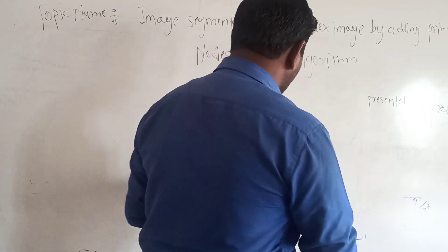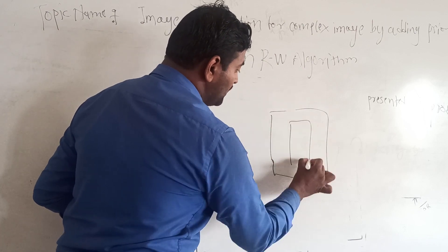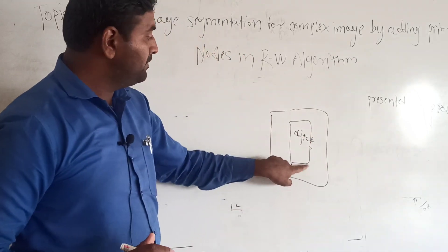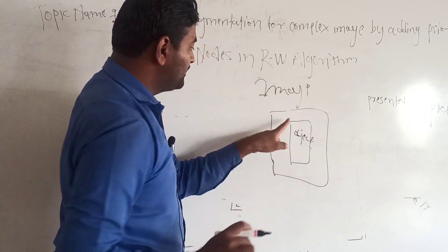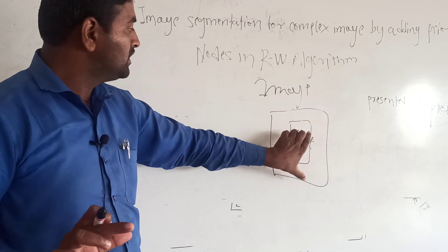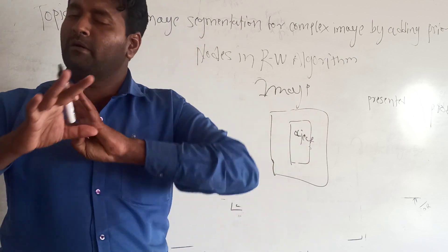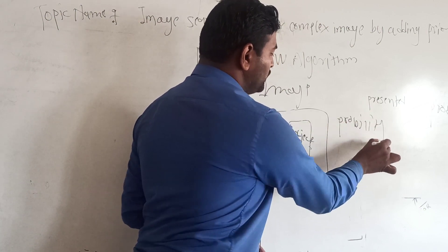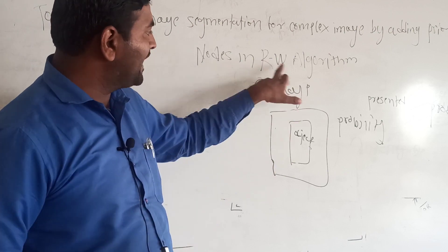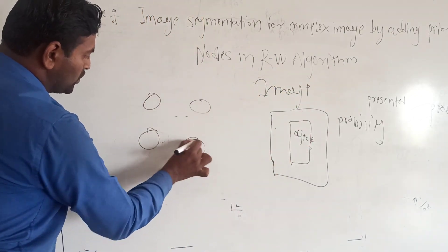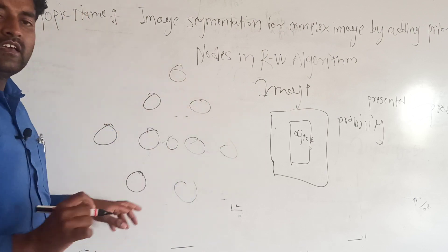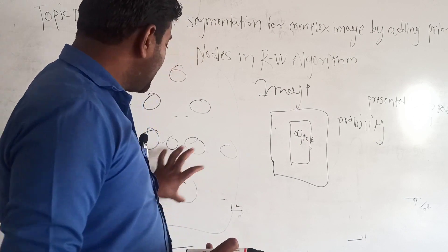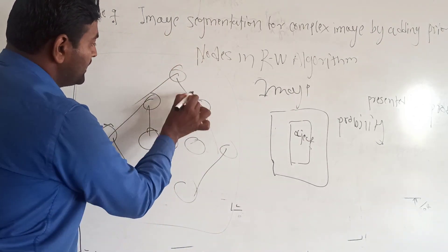Any image basically has a foreground and background. The main object of that image is the foreground, and the rest is the background. That image is made up of a number of pixels, and those pixels have some probability values. Using those probability values with the random walk algorithms, we plot a graph where the image is described as a graph having nodes, vertices, and edges.